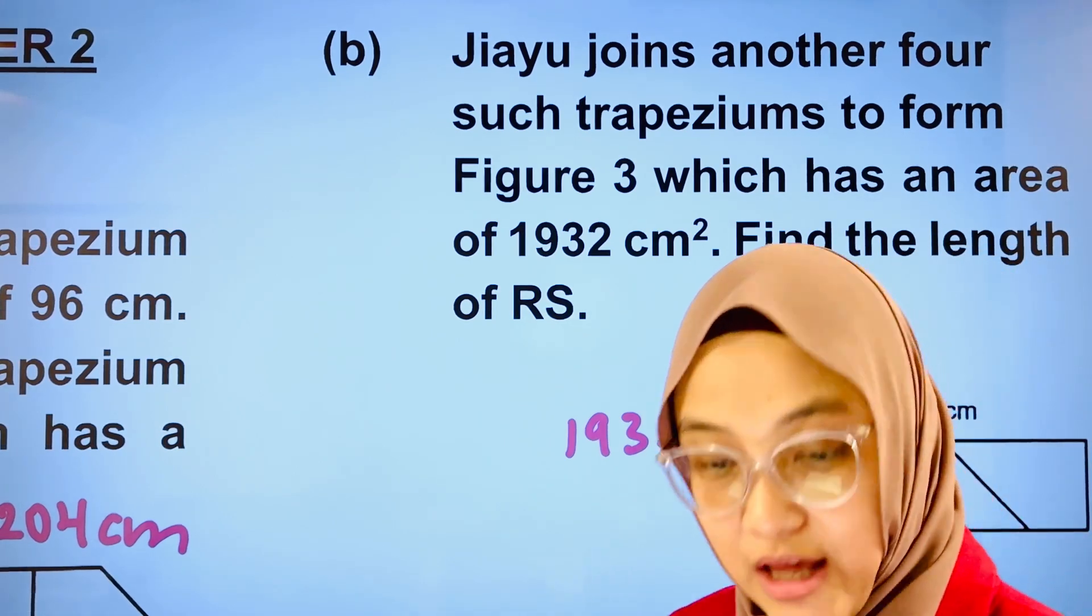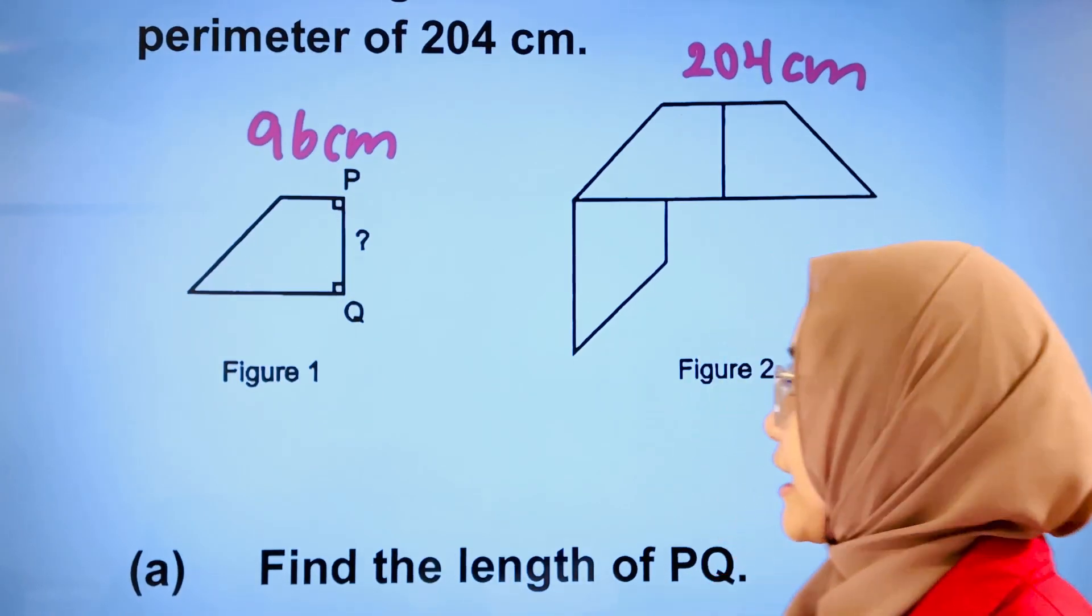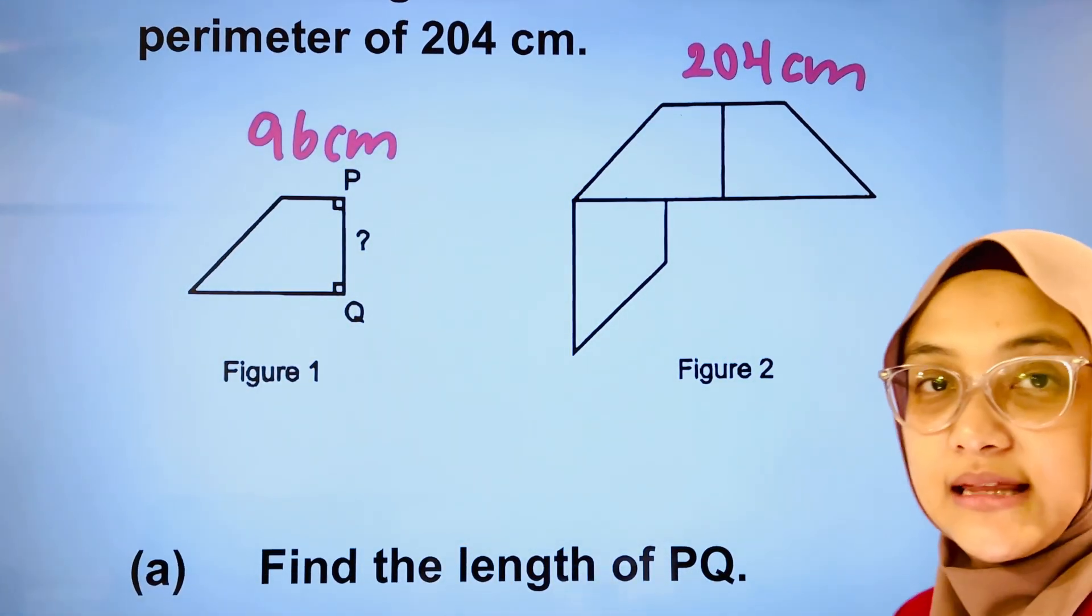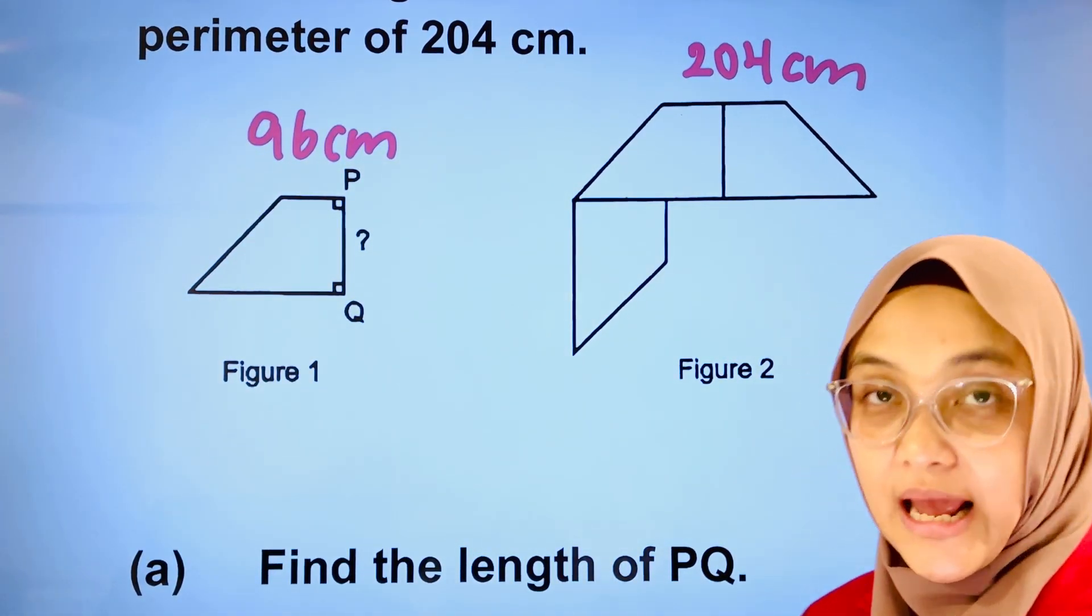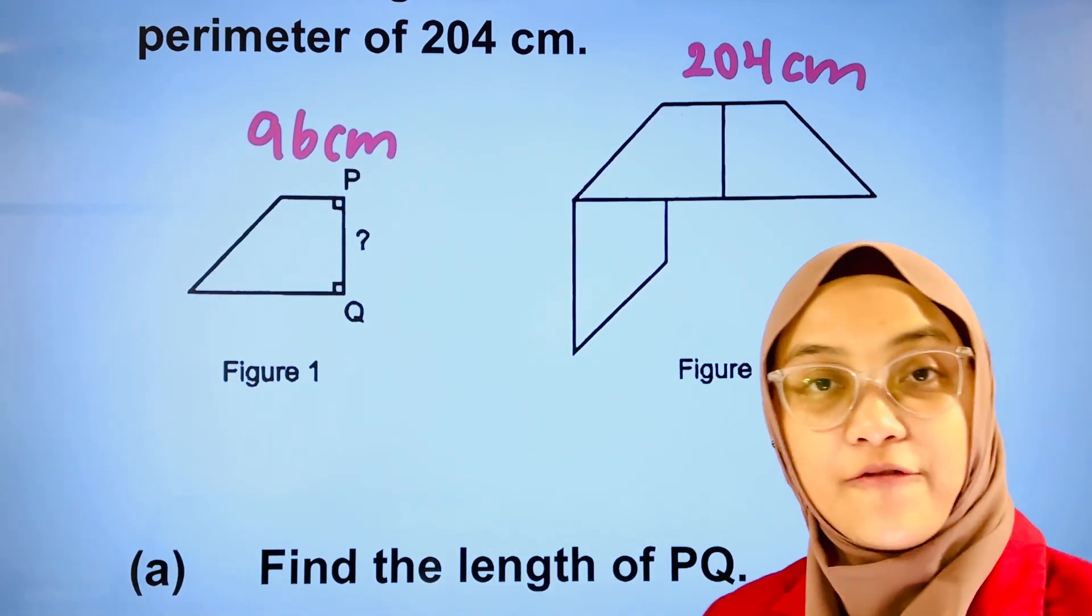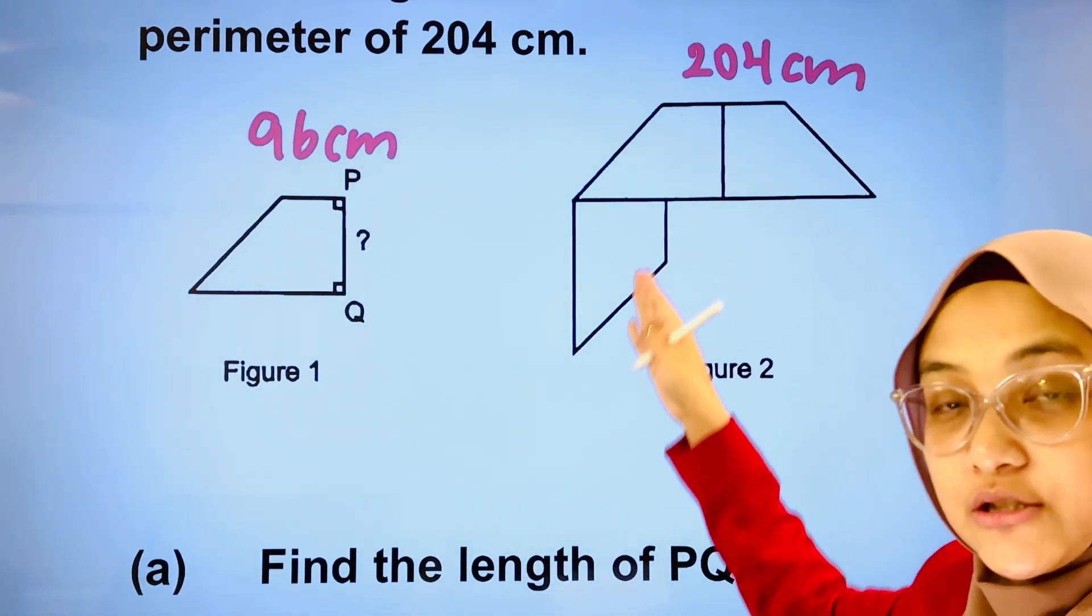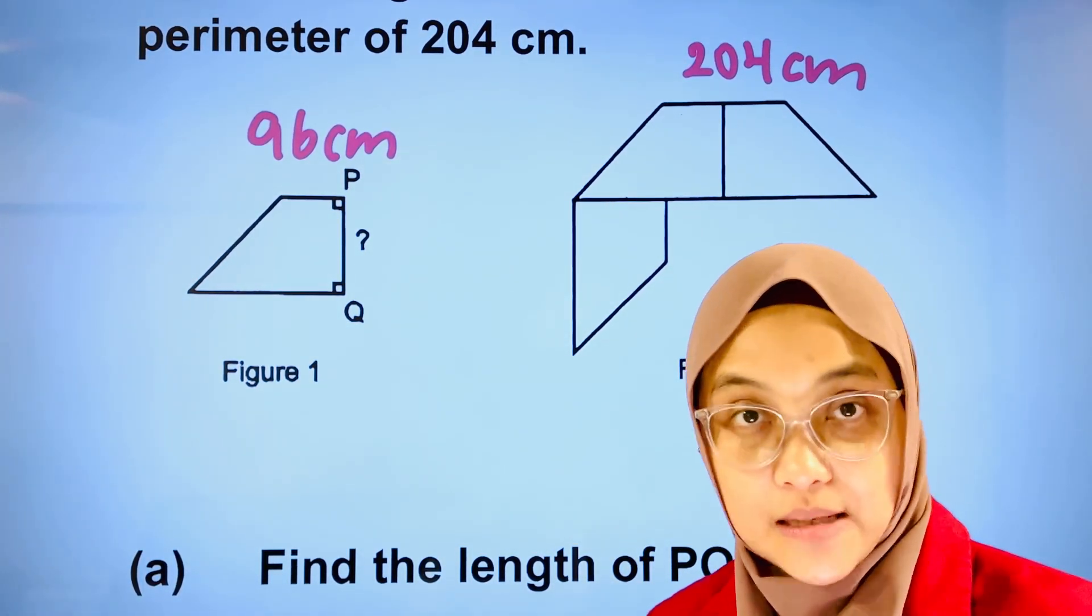Let's solve part A together. In part A, we are asked to calculate the length of PQ and we know the perimeter of one trapezium is 96 cm, and when the three trapeziums are joined together, the perimeter is 204 cm.